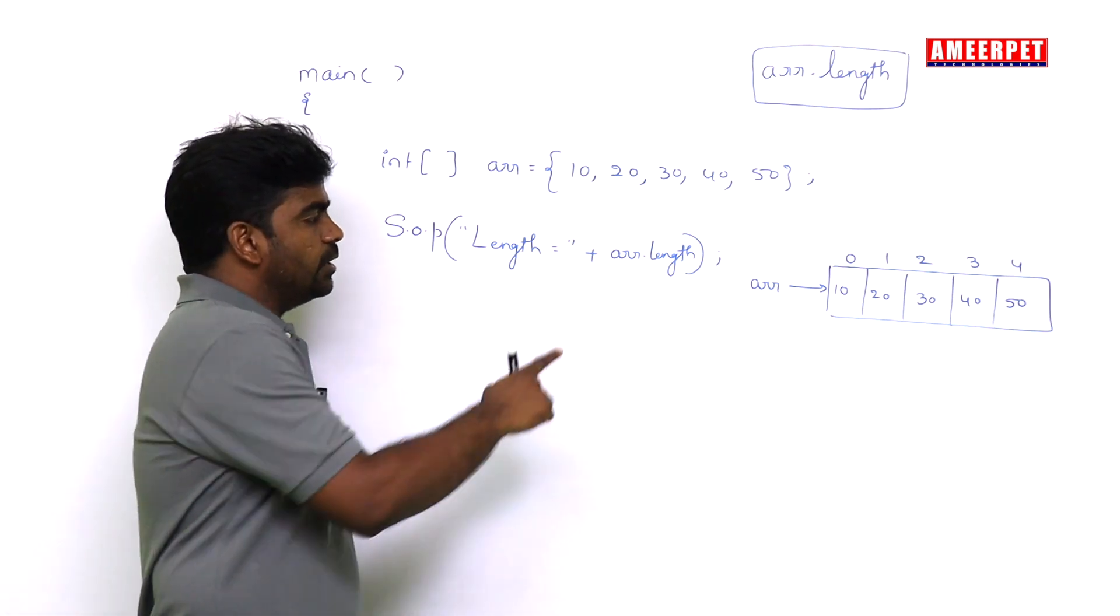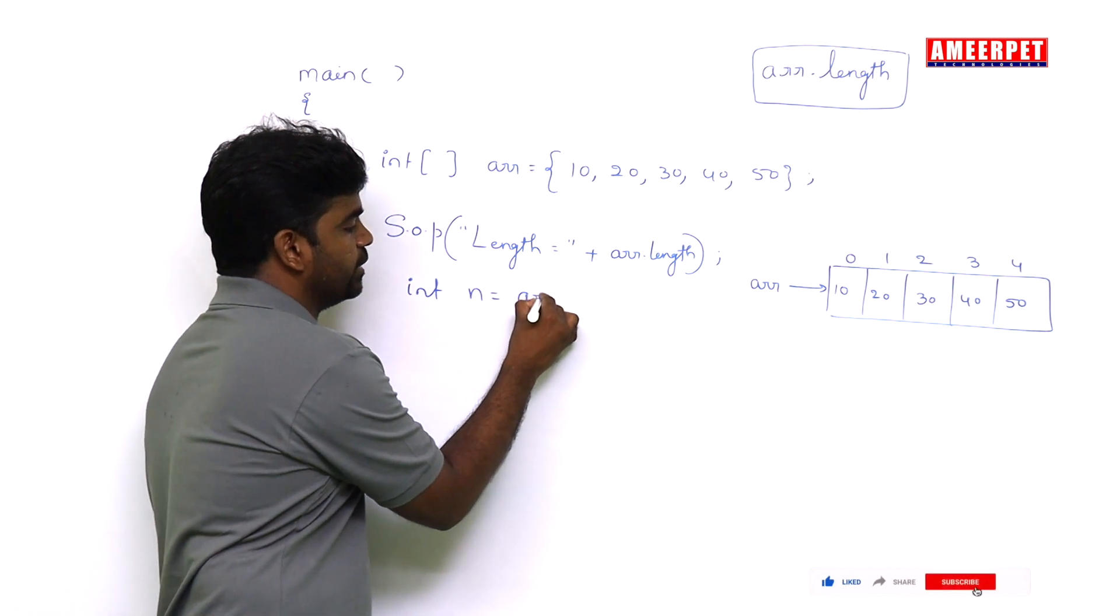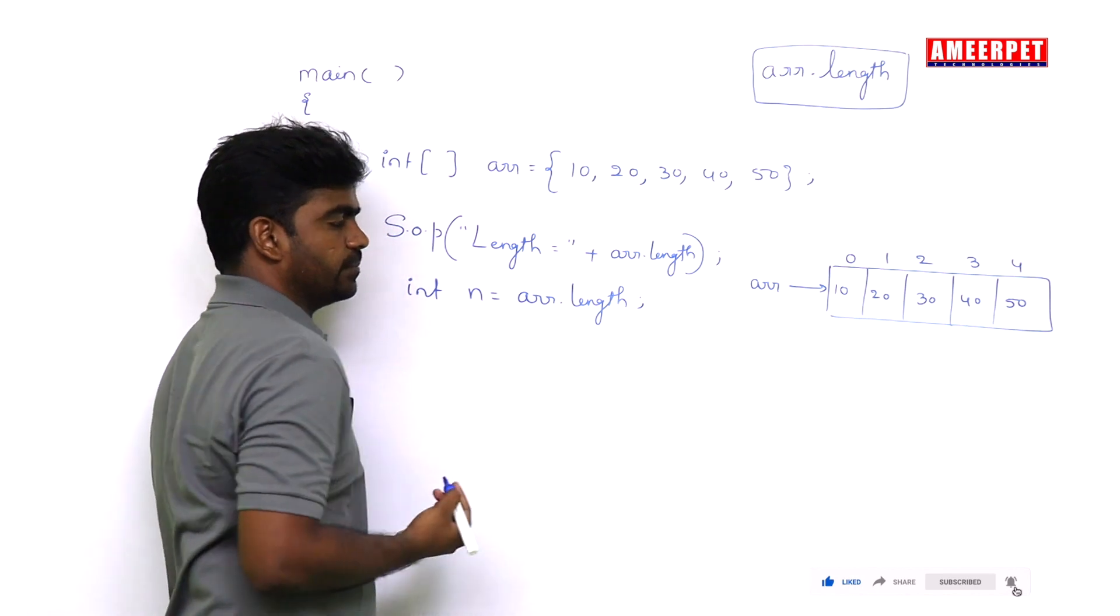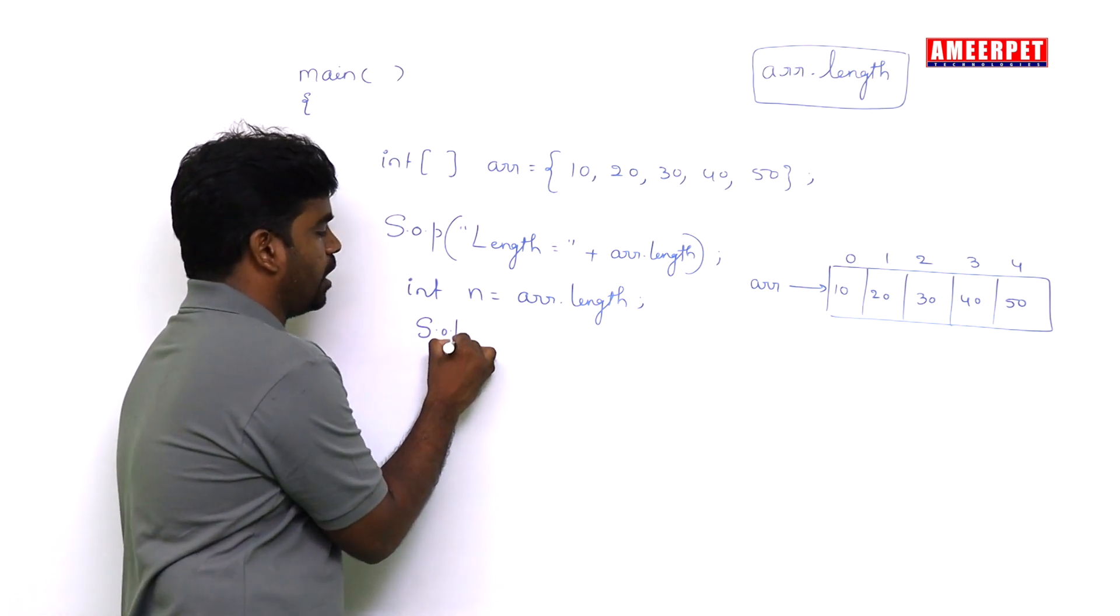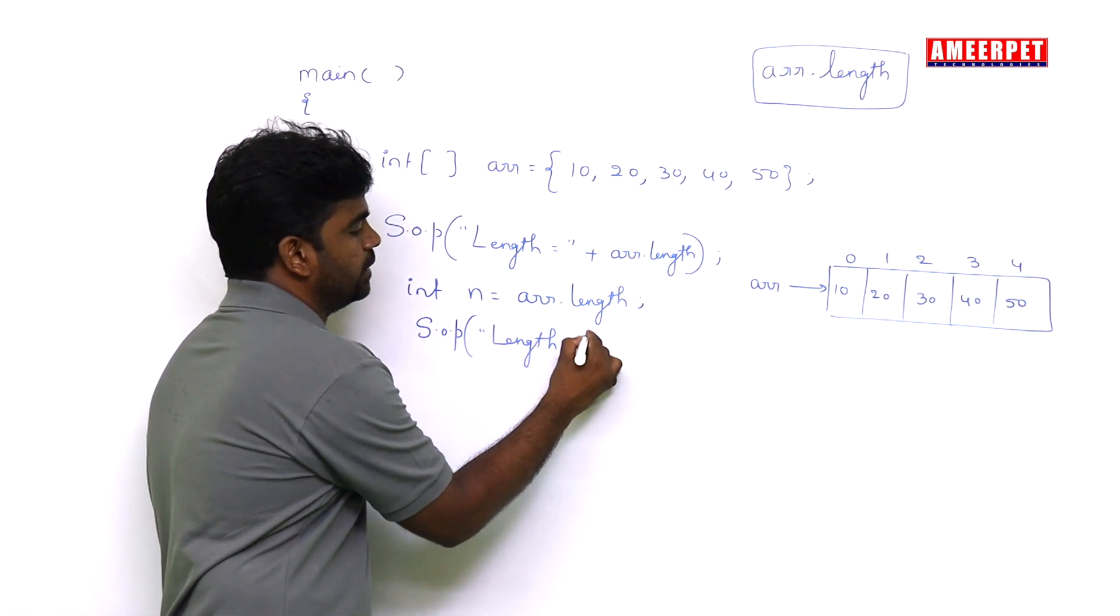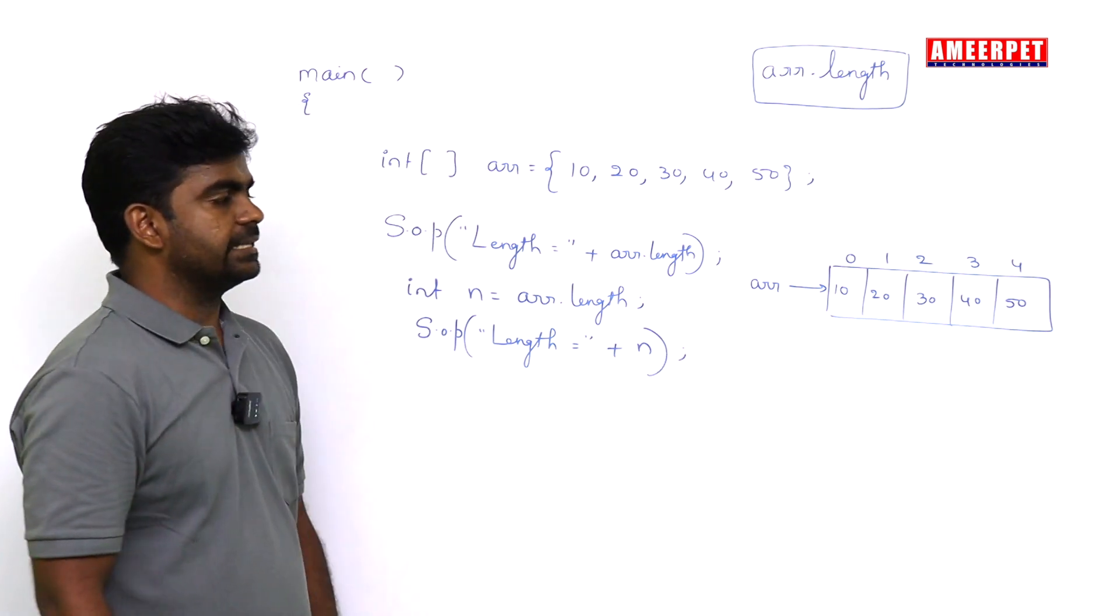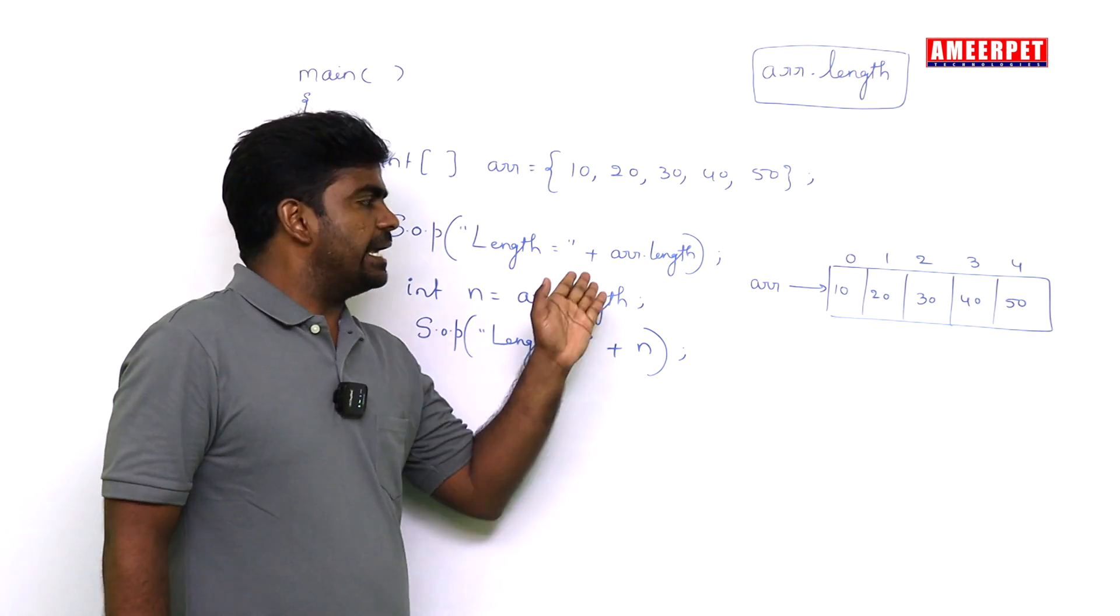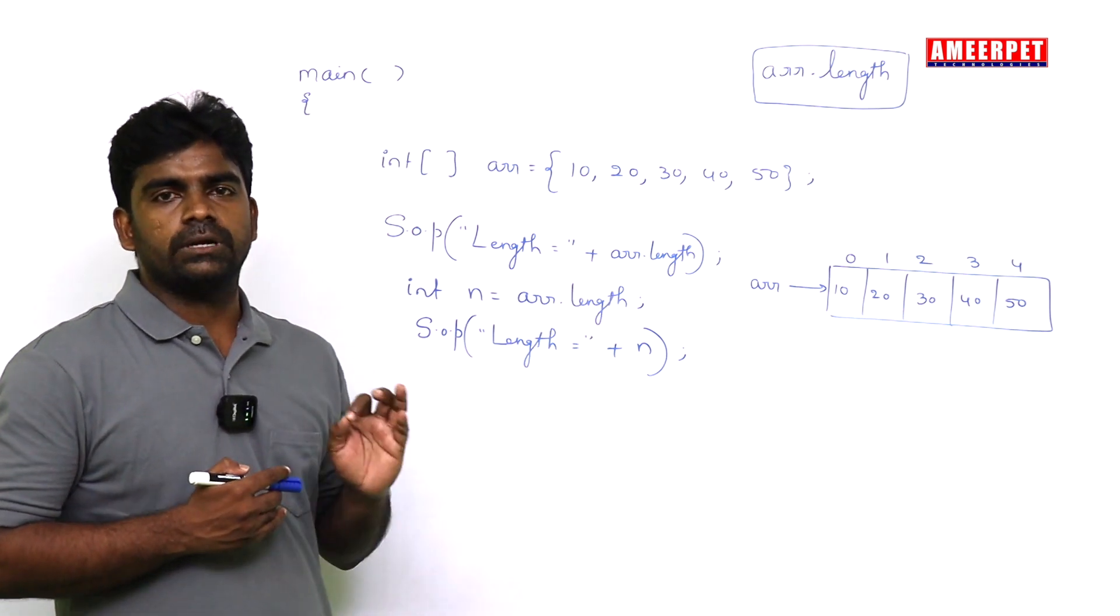The next one: I want to collect this into one variable first. I'll keep this in one variable: arr.length, and then we are accessing System.out.println, that length equal to n. This is the second way of printing the length. The first way is direct, and here we are wasting some memory.